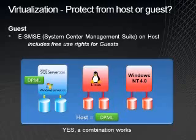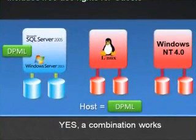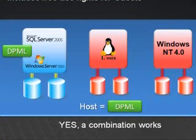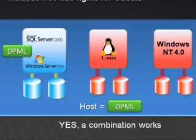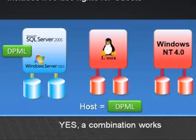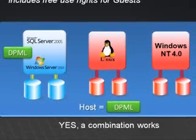The good news is you can use both methods together. For line of business, VSS-capable applications and operating systems that can run a DPM agent on the inside, put a DPM agent inside to protect and restore individual databases. You can also run the DPM agent on the host to protect non-Windows or earlier Windows OSs, as well as protect the outside of that line of business app so you can restore the entire machine as needed.